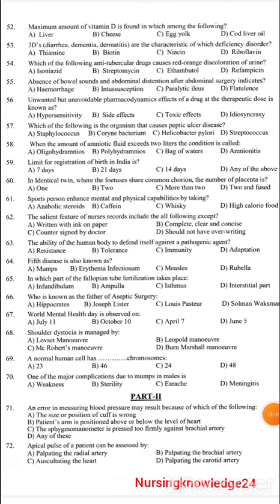Apical pulse of a patient can be assessed by: a) palpating the radial artery, b) palpating the brachial artery, c) auscultation of the heart, or d) palpating the carotid artery. The answer is c) auscultation of the heart.